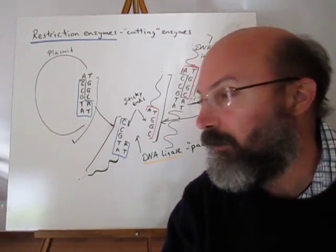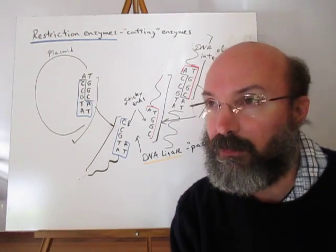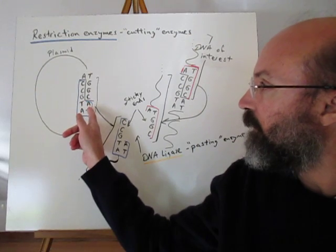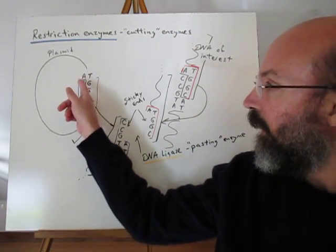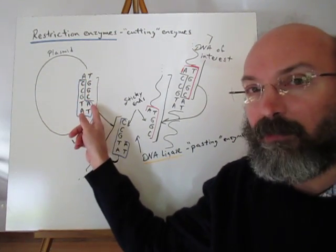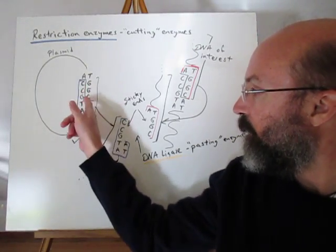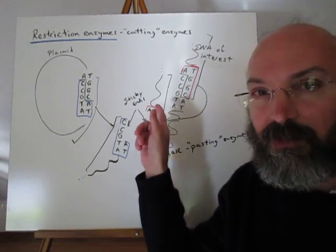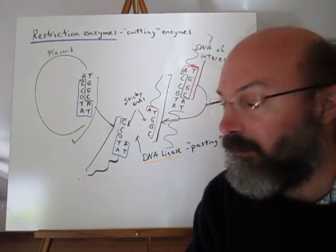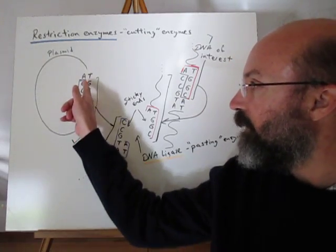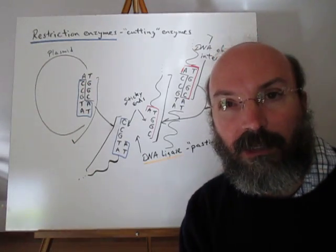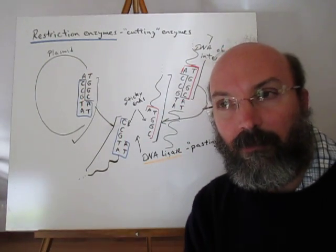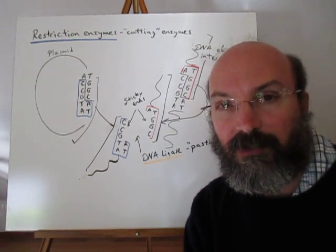Restriction enzymes cut at particular sequences — there are hundreds and hundreds of different types. So if this was our plasmid, it would cut at this particular sequence here. Here's our plasmid being cut and here's our DNA of interest also being cut at the same sequence. What this does is produce just half of the strand of DNA on each place where it's cut, meaning you have places where hydrogen bonds can form. This is called a sticky end.